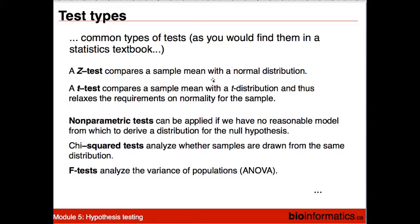Relaxing the requirements on normality for the sample, we come to the T test — usually the workhorse of our statistics. It compares the sample mean with a T distribution, which essentially asks how far the averages are allowed to be different from each other from two populations before we have to conclude that one population is different from the other. The requirements on normality are relaxed so we can accommodate more easily non-normal distributions, especially with a large number of measurements. This is why it's a very popular test.